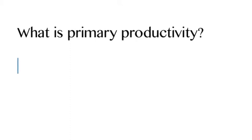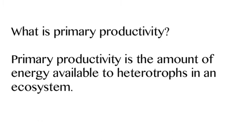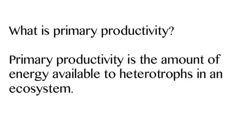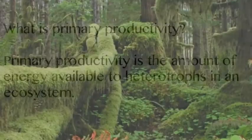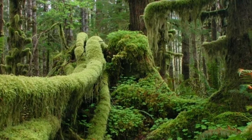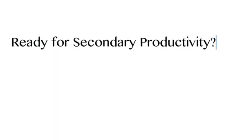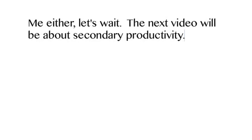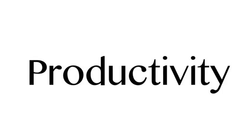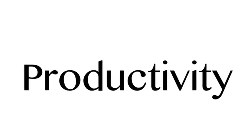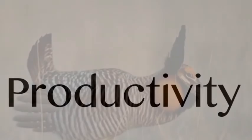Here's something else: what is primary productivity? Primary productivity is the amount of energy available to heterotrophs in an ecosystem. Essentially, all of the glucose made by all the plants is now available for other organisms to eat — that's primary productivity. We'll deal with secondary productivity later. Watch the video again, ask questions. Peace out.